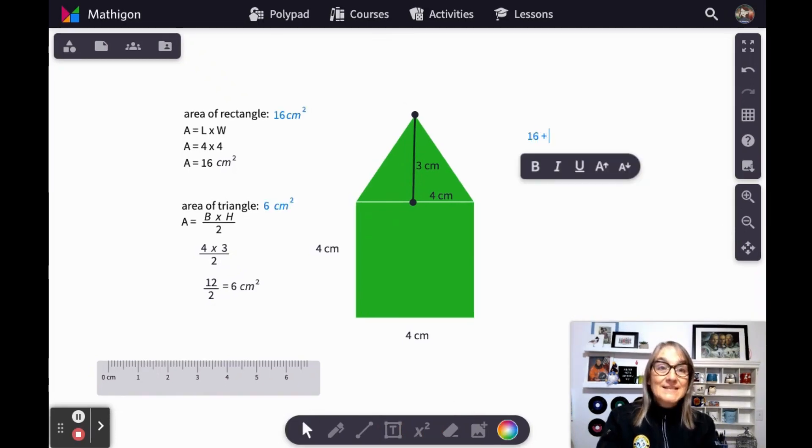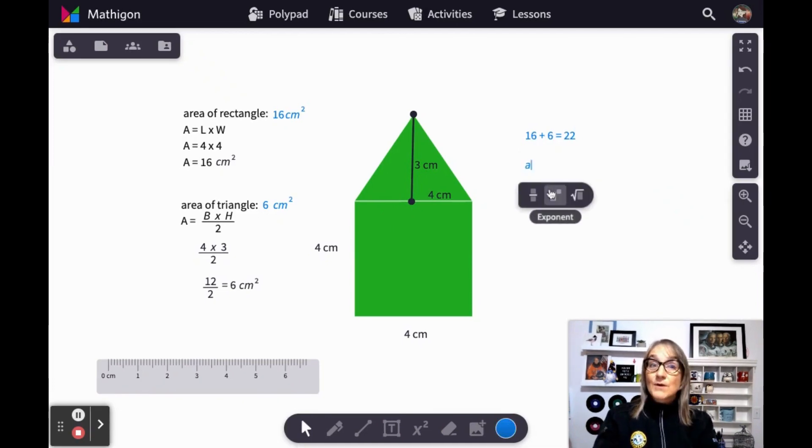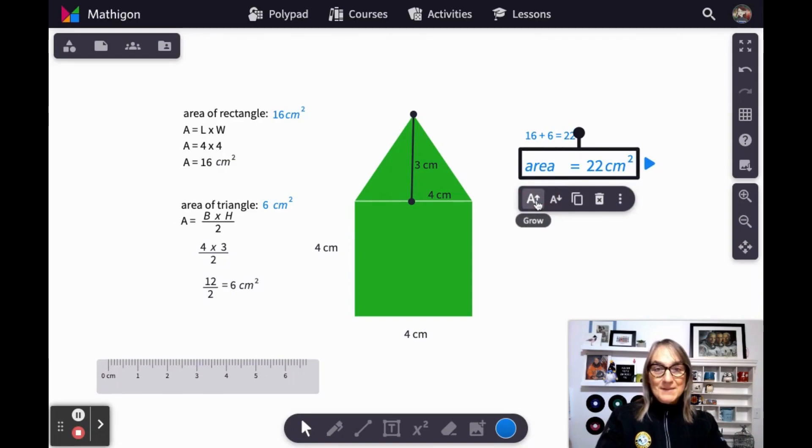16 plus six equals 22. So our total area equals 22 centimeters squared, or 22 square centimeters.